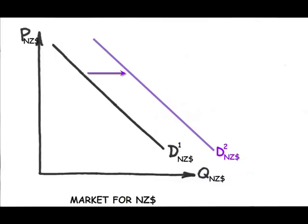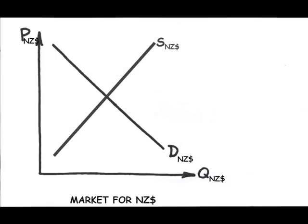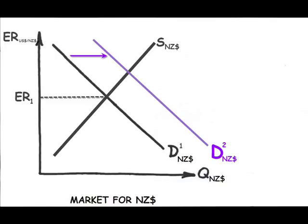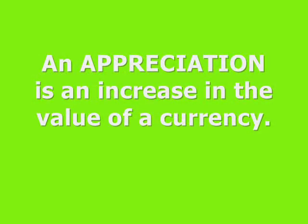Now let's go back to the idea of the foreign exchange market, with the New Zealand dollar being the foreign exchange. Initially, there's a certain supply of New Zealand dollars and a certain demand. The equilibrium price in this market is called the exchange rate. Now let's throw the increase in demand for the New Zealand dollar into the picture. As with any commodity, when the demand for the New Zealand dollar increases, its value increases. We see the exchange rate, in terms of US dollars per New Zealand dollar, increase. This is called an appreciation of the New Zealand dollar.